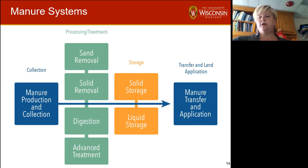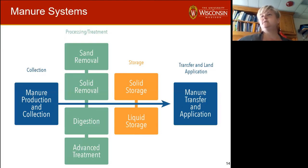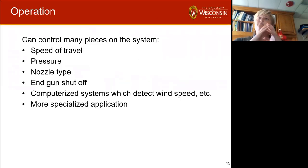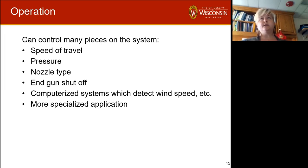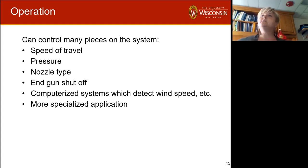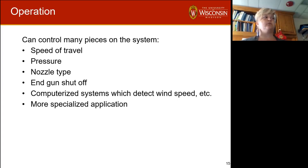There are lots of things that you can control in a system. There are a lot of pieces and a lot of management to each system. Not all systems are the same, and there are a lot of pieces that may impact things like odor, runoff, or other concerns. You can control the rate of application, you can change the pressure and the nozzle type. The nozzle types used for manure are much larger.